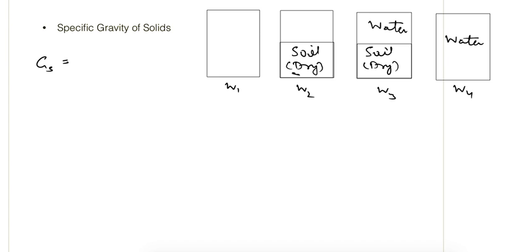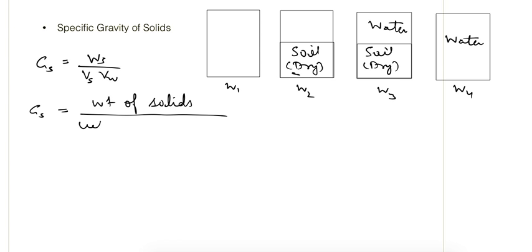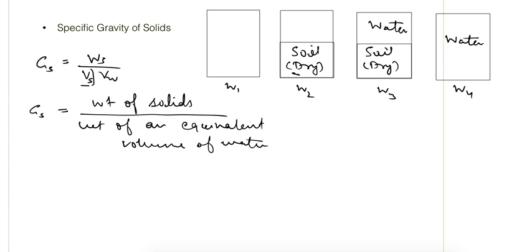Specific gravity is given as weight of solids to the weight of an equivalent volume of water. It means that if we can find out the weight of water which is occupied by the volume of solids, then Vs times gamma_w gives us the weight occupied by the volume of solids. In this method, if we can find out the water which will replace the volume of solids, that way we can calculate the specific gravity.